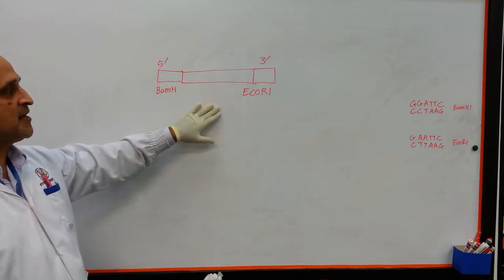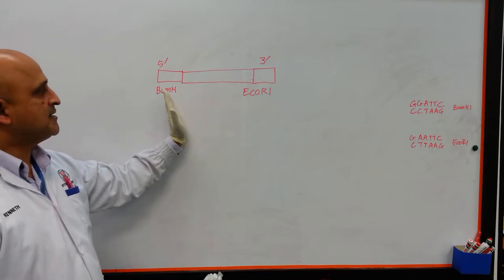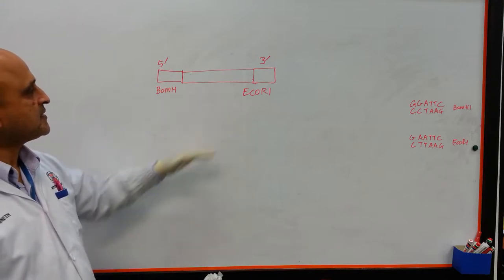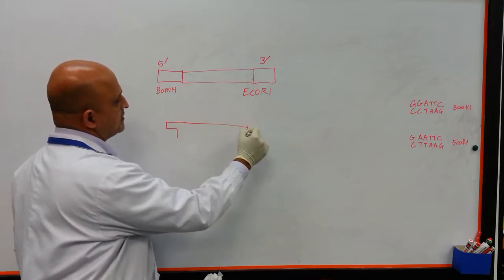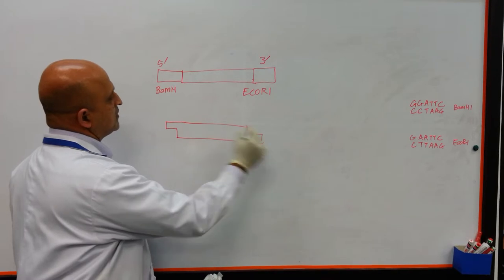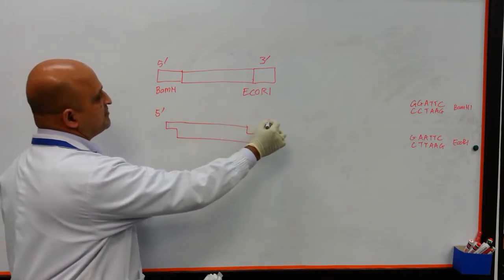Now, when this product is digested or cleaved with these enzymes, what you will obtain is an overhang or a sticky fragment at the 5' and 3' end.